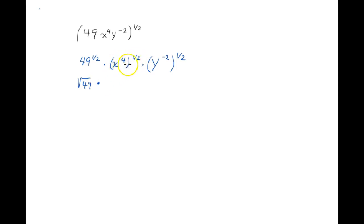x to the fourth raised to the one-half, when you have an exponential expression raised to an exponent, you multiply those. So that's x to the four times one-half. So four times one-half is two, so I'll write x squared.